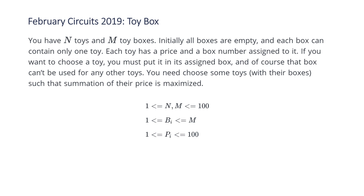The constraints for this problem are N and M are going to be between 1 and 100. B, the box number, is going to be between 1 and M obviously — it can't be greater than the number of boxes. And P, the price for each of our toys, is going to be between 1 and 100. So the constraints for this problem are going to be pretty small, so we don't really need to worry about time complexity.